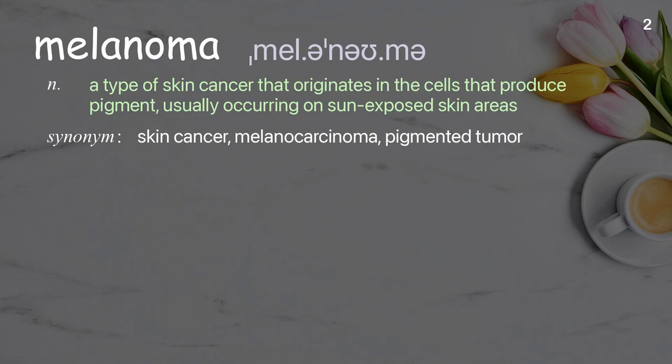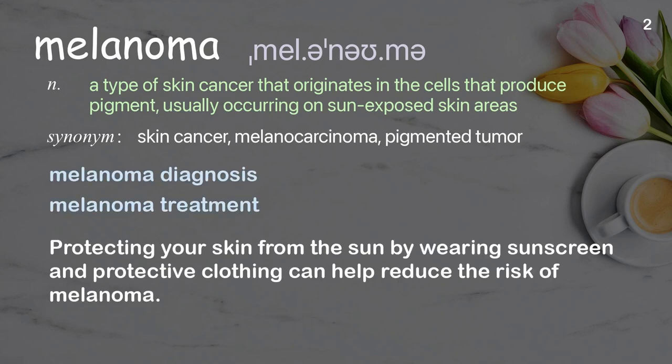Melanoma. A type of skin cancer that originates in the cells that produce pigment, usually occurring on sun-exposed skin areas. Examples: melanoma diagnosis, melanoma treatment. Protecting your skin from the sun by wearing sunscreen and protective clothing can help reduce the risk of melanoma.